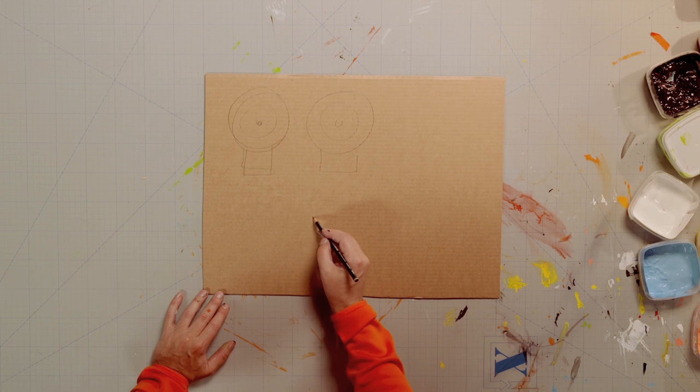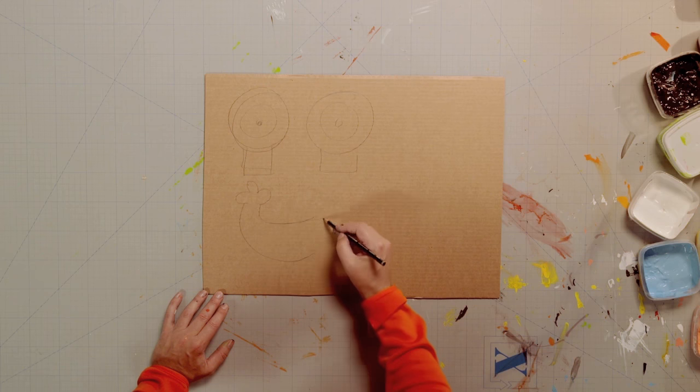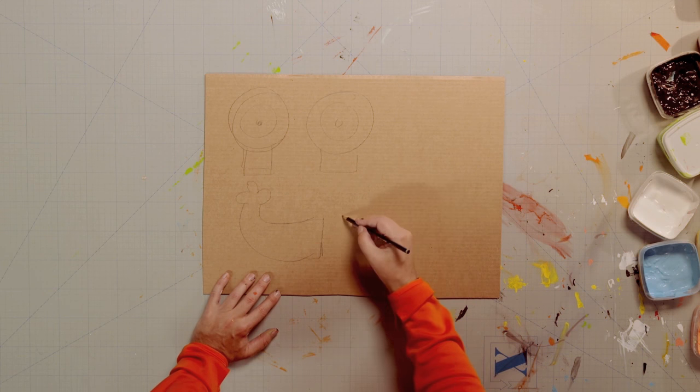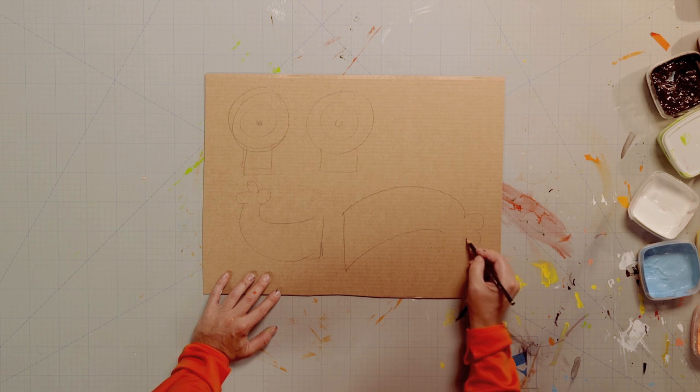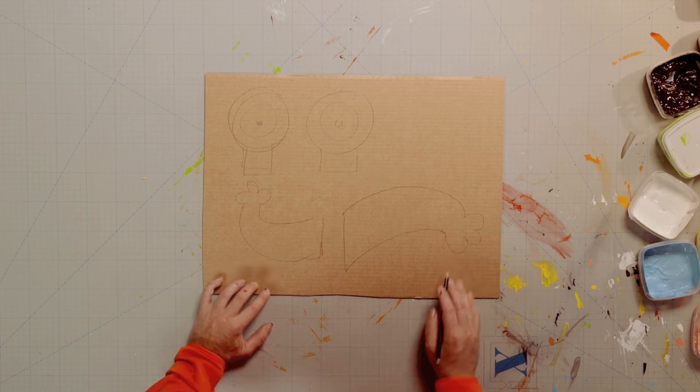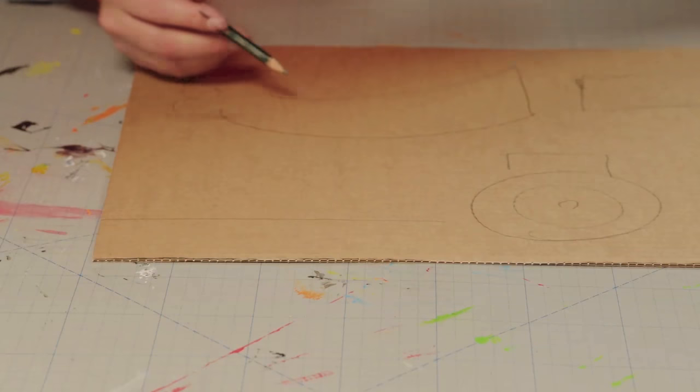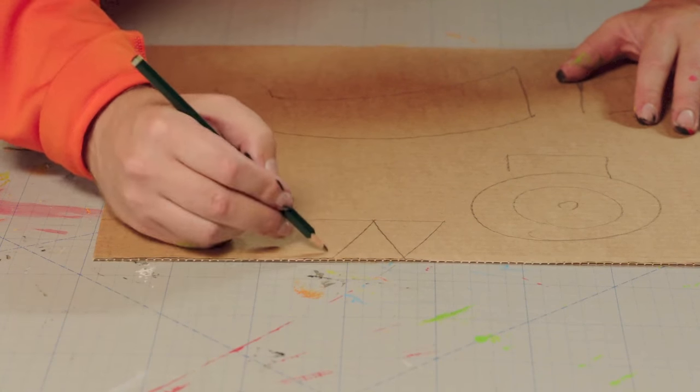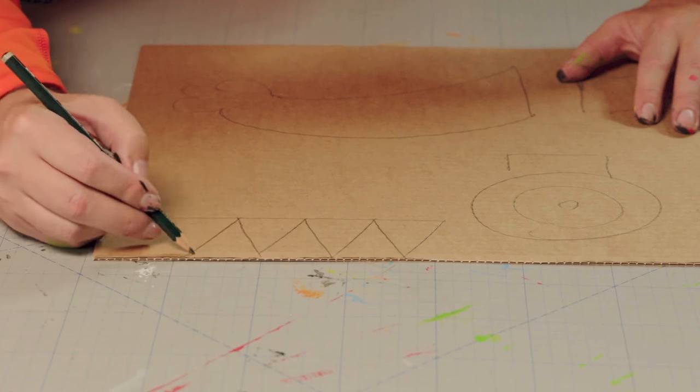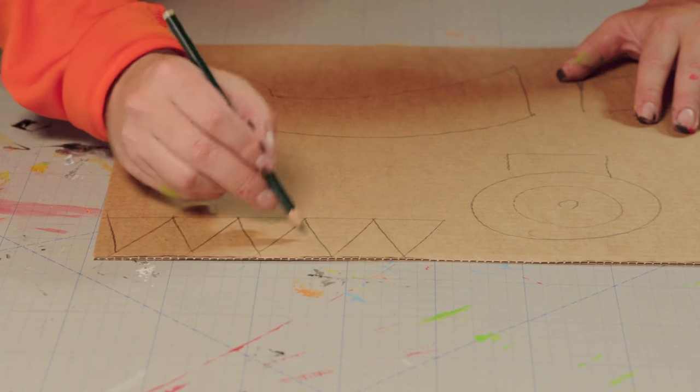Next come the arms. One pointing up and one pointing down. Then it's the teeth. Make these by drawing a long strip with a ruler, and then a zigzag pattern to cut out later.